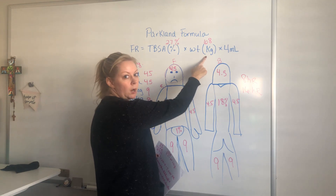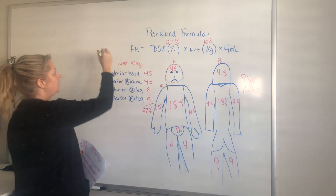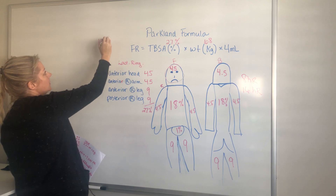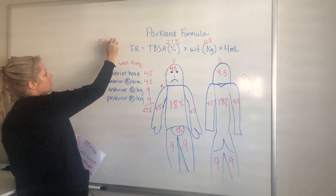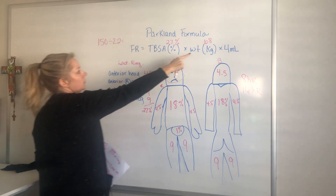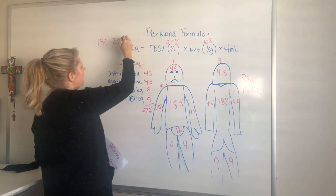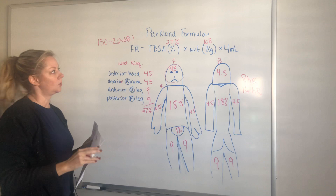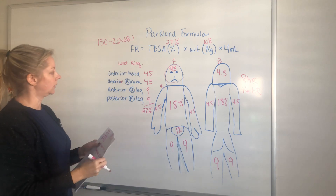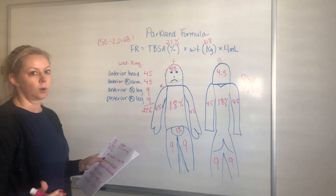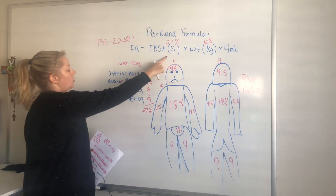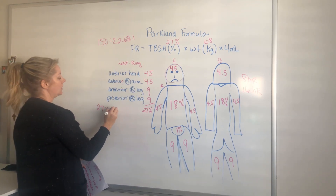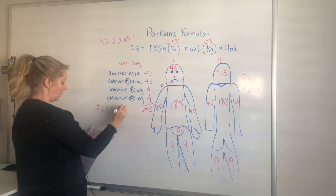Now we need to figure out their weight in kilograms. This person is 150 pounds — divide by 2.2 and you get 68.1, which we round to 68 kg. Now we're ready to do our formula: 27 × 68 × 4.